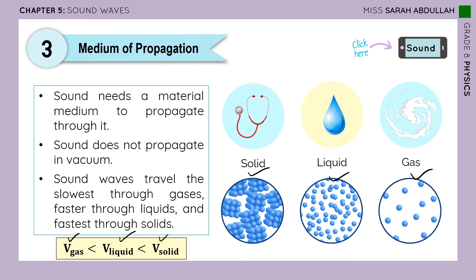Why is that? In a gas, the air particles are far away from each other, so for one particle to give energy to the next it has to travel a large distance and then come back to its initial position. In a liquid, the particles are much closer, so it takes less time to reach the next particle. And in a solid, they are right next to each other, so it takes almost no time at all.